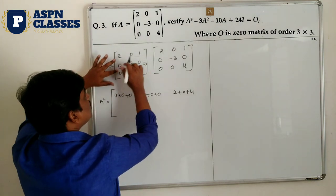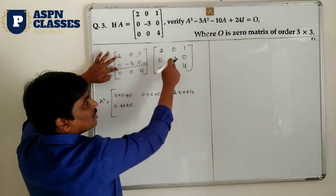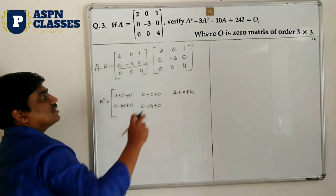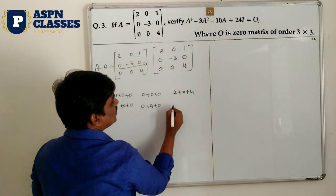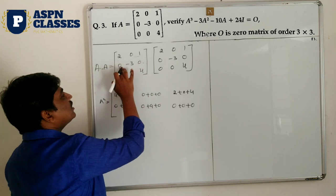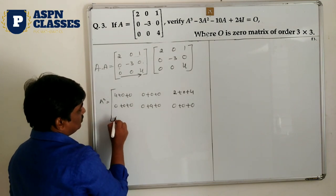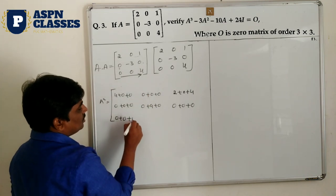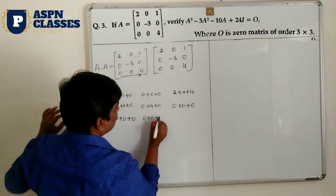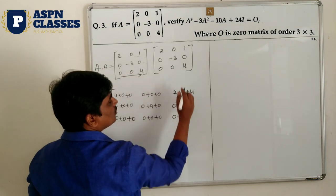Second row multiplied by first column: 0×2=0, (-3)×0=0, 0×0=0. Second row multiplied by second column: 0×0=0, (-3)×(-3)=+9, 0×0=0. Second row multiplied by third column: 0×1=0, (-3)×0=0, 0×0=0. Third row multiplied by first column: 0×2=0, 0×0=0, 4×0=0. Third row multiplied by second column: all zeros. Third row multiplied by third column: 0×1=0, 0×0=0, 4×4=16.